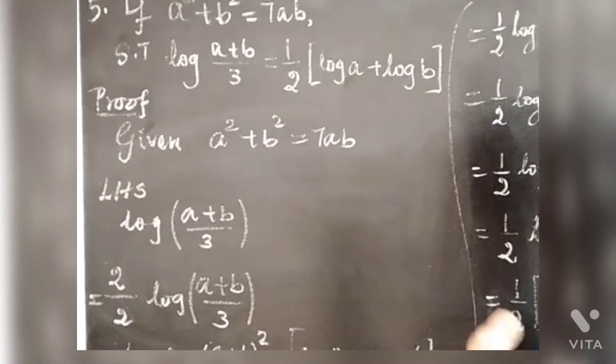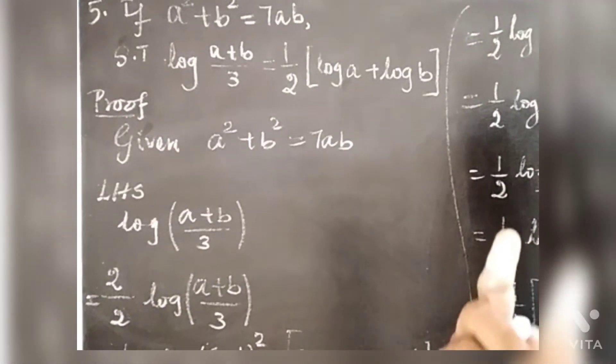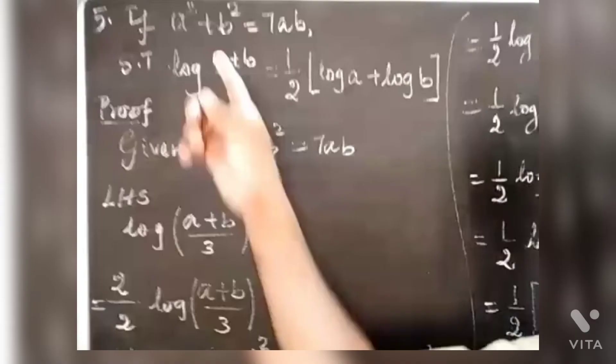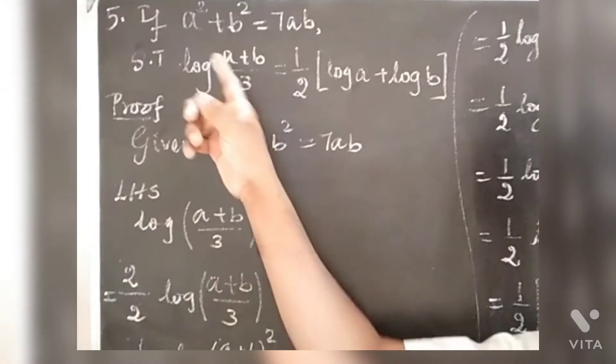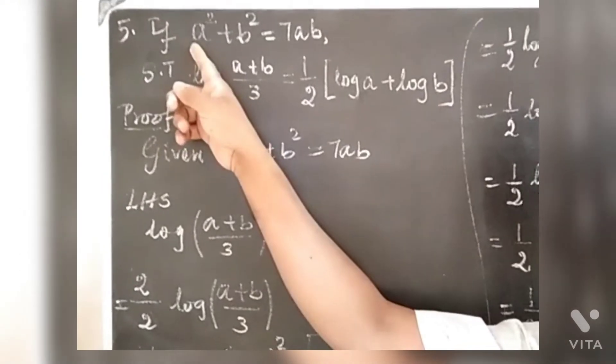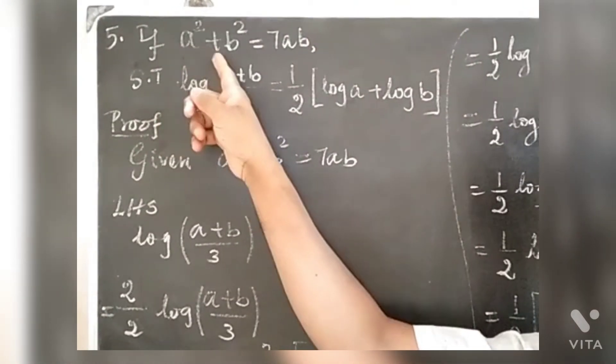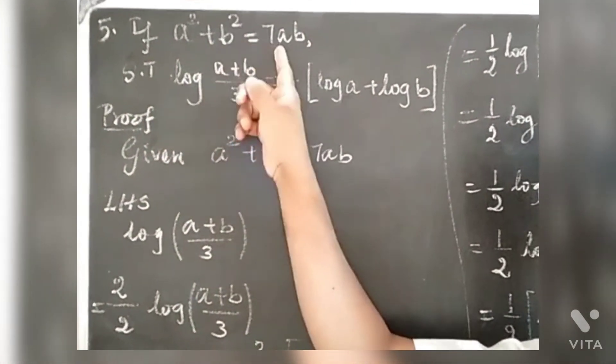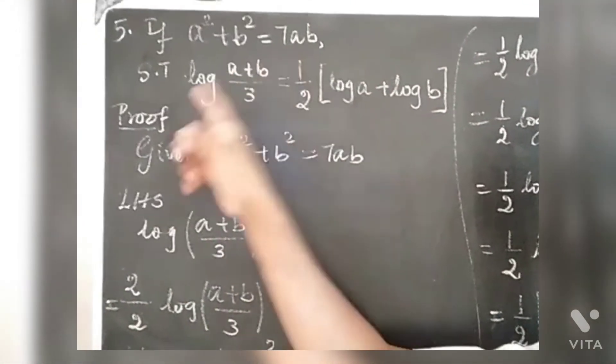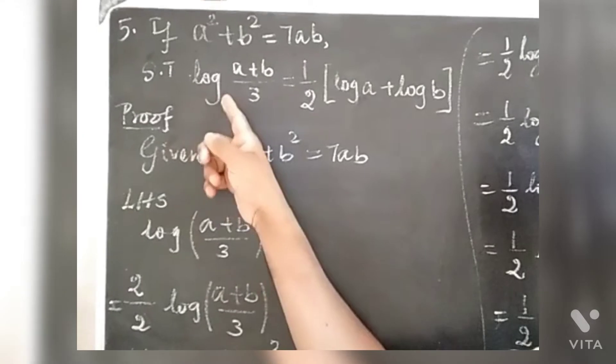This is the 11th math problem, chapter 2, which is 2.12, 5th sub. If A squared plus B squared equals 7AB, we need to prove it.